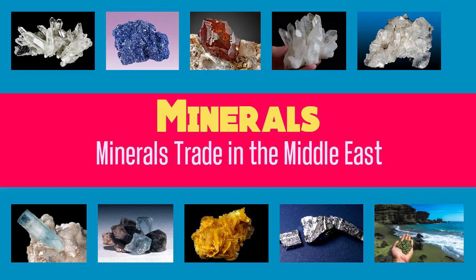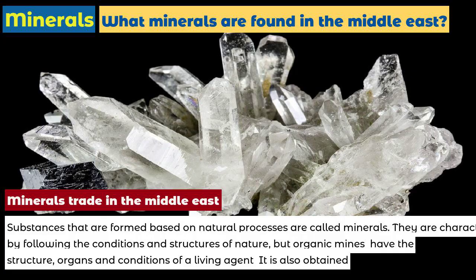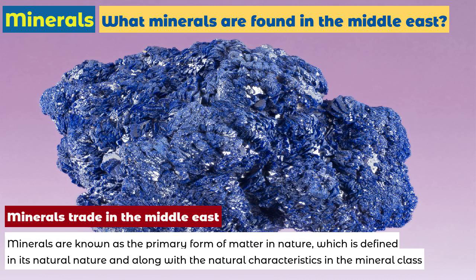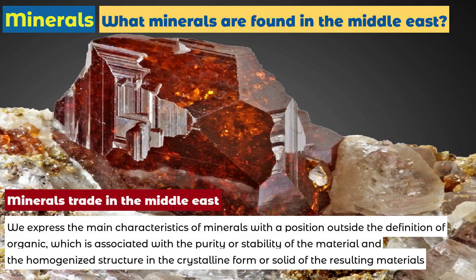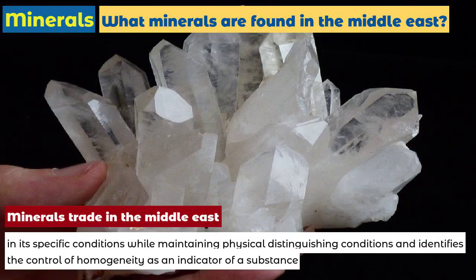Minerals trade in the Middle East. Substances that are formed based on natural processes are called minerals. They are characterized by following the conditions and structures of nature, but organic mines have the structure, organs, and conditions of a living agent. Minerals are known as the primary form of matter in nature, defined along with natural characteristics in the mineral class. The main characteristics of minerals are expressed with a position outside the definition of organic, associated with purity or stability of the material and the homogenized structure in the crystalline form or solid of the resulting materials.